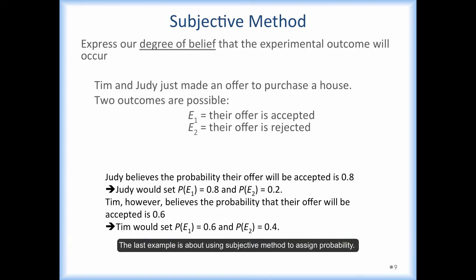The next example is about using subjective method to assign probability. The subjective method allows a decision maker to express his or her belief in the likelihood for an outcome to occur. In this example, Tim and Judy just made an offer to purchase a house. There are two possible outcomes: either their offer is accepted or rejected. Judy and Tim may have different degrees of confidence that their offer will be accepted. And therefore, they may assign different probabilities to the two outcomes.